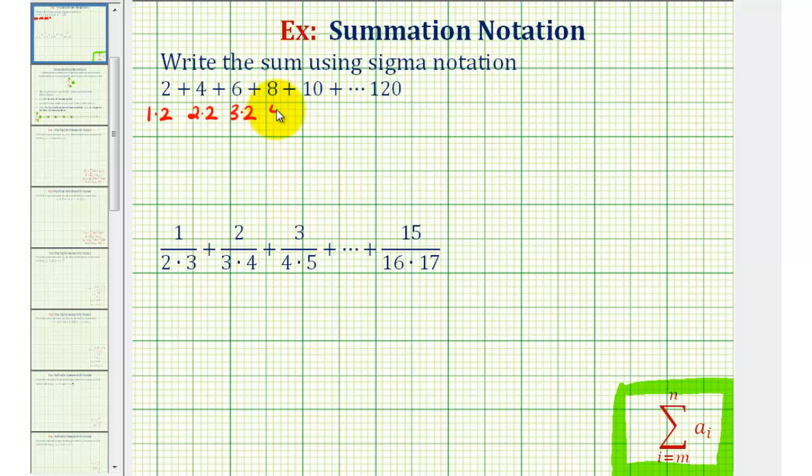Eight as four times two, ten as five times two. And if we continue this pattern for 120, we'd want a factor of two so this would be 60 times two.